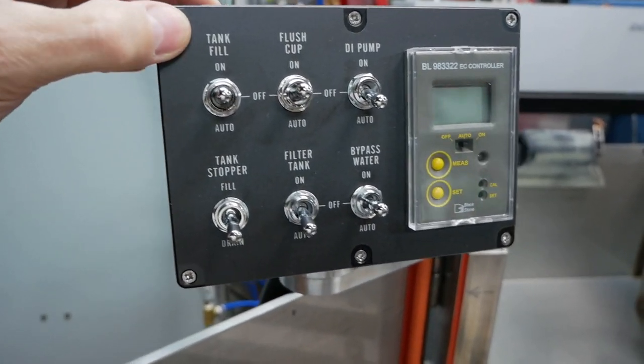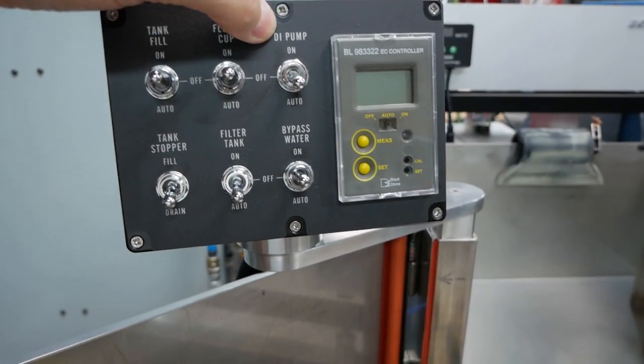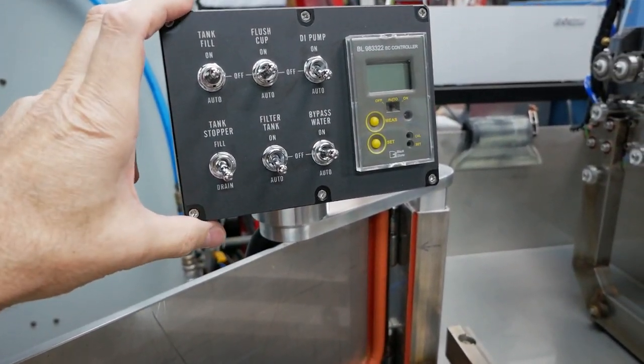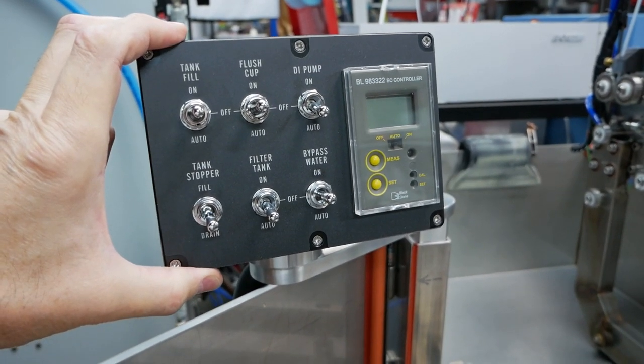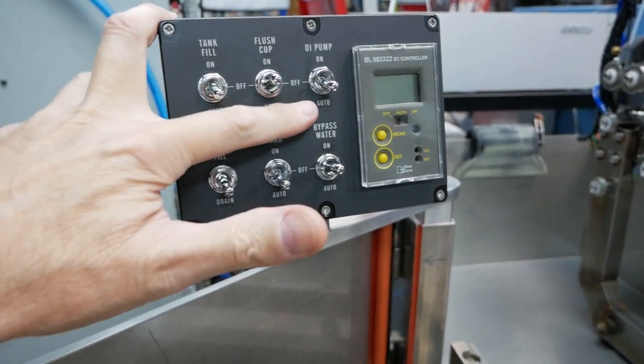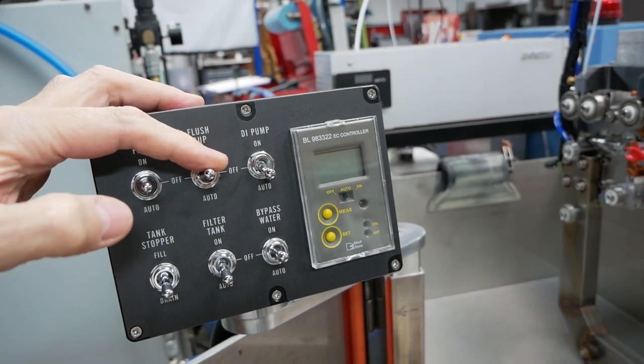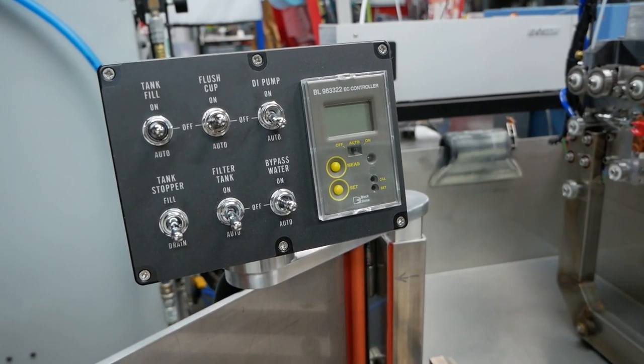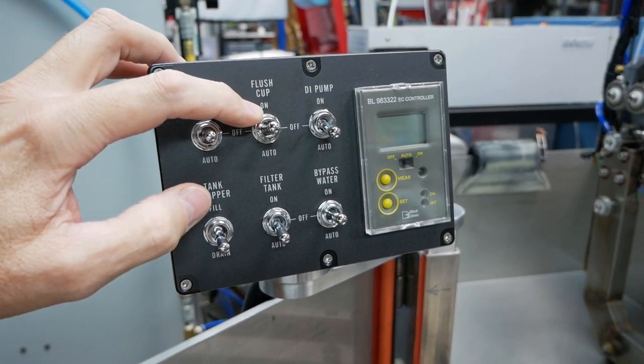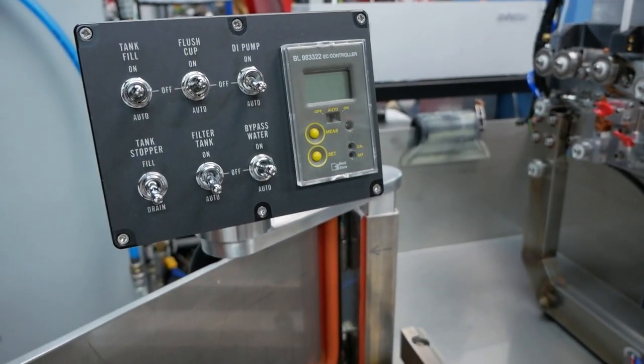This handles the tank fill, the tank stopper, the filtration pump, the flush cup pump, the DI pump, and the bypass water pump. The cool thing about having this control here is this goes into a switcher box. I can actually allow the computer to control some of these devices or I can manually control it here. If I have these flipped down into the auto position, that's where the computer has control over it. When the computer shuts off, it automatically will shut off, which is a really nice feature to have.